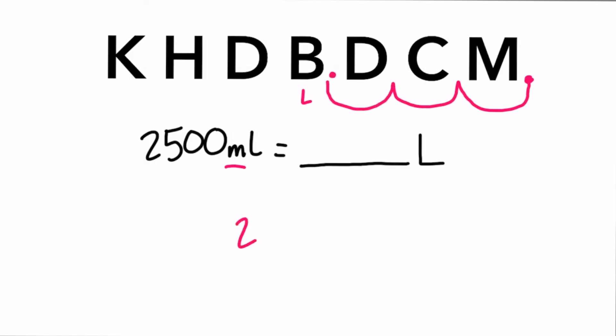So we have to write 2,500 and move our decimal to the left, one, two, three spaces. So our final answer, we don't have to include those extra zeros. So our final answer is 2.5 liters.